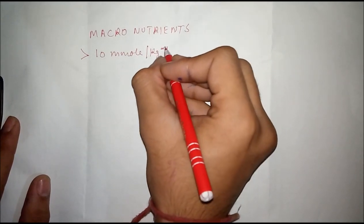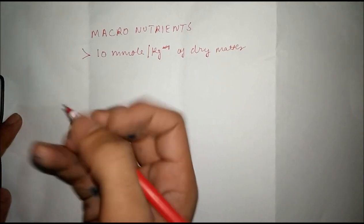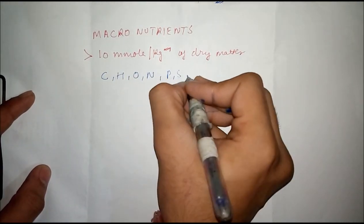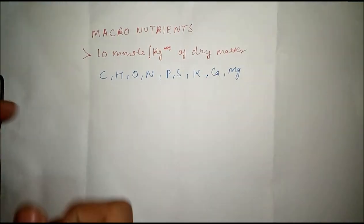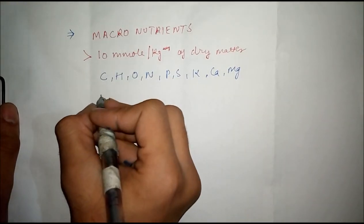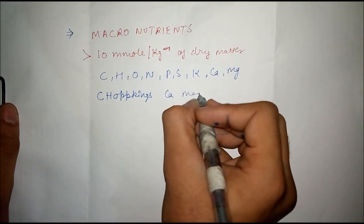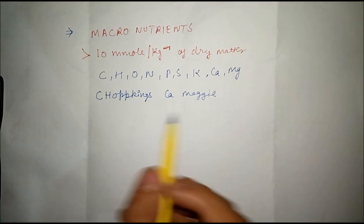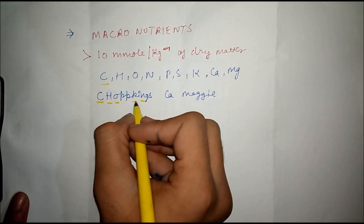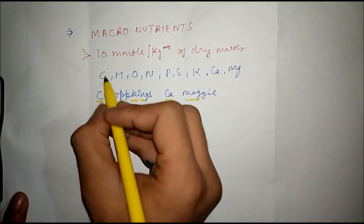The elements present are C, H, O, N, P, S, K, Ca, Mg. The trick for learning these is 'Chopkins Ca Maggi'. In this formula everything is involved: carbon, hydrogen, oxygen, nitrogen, potassium, phosphorus, sulfur, calcium, magnesium.